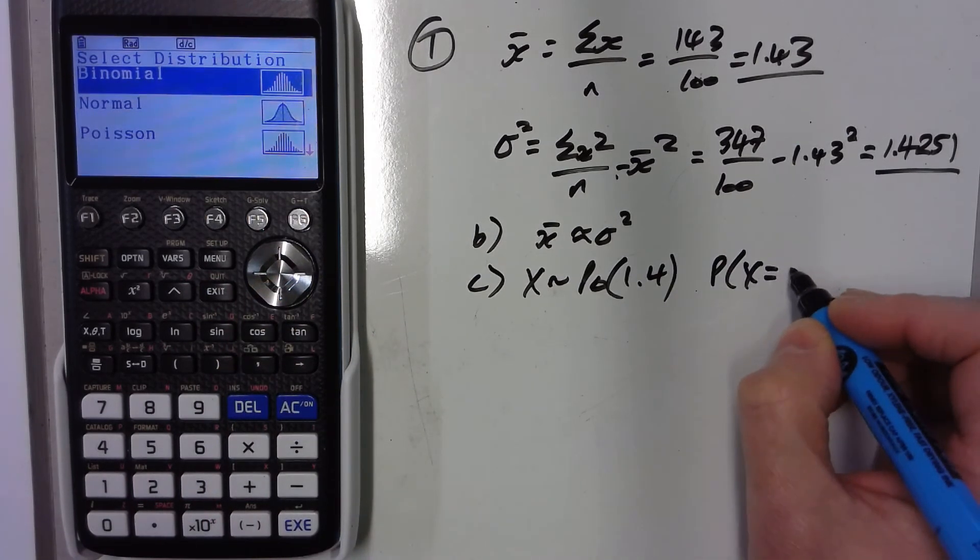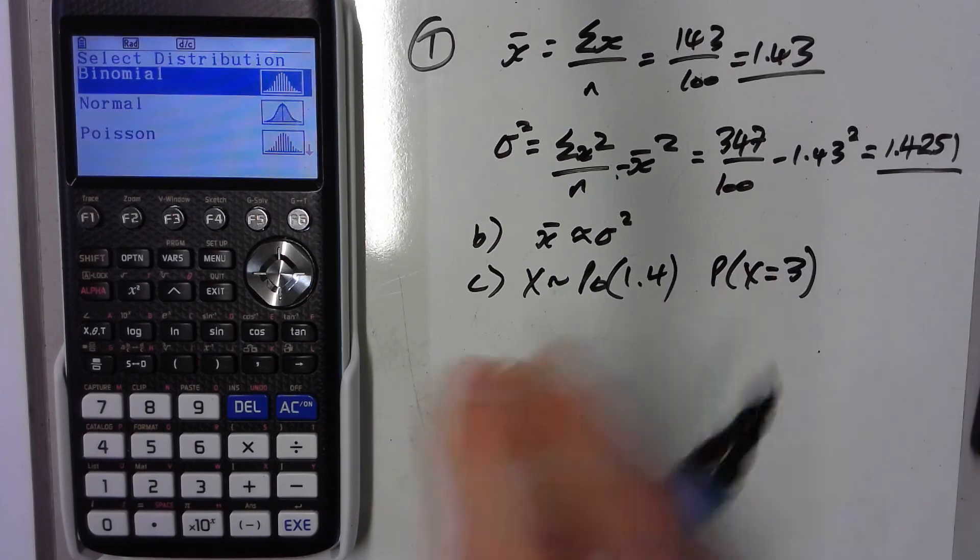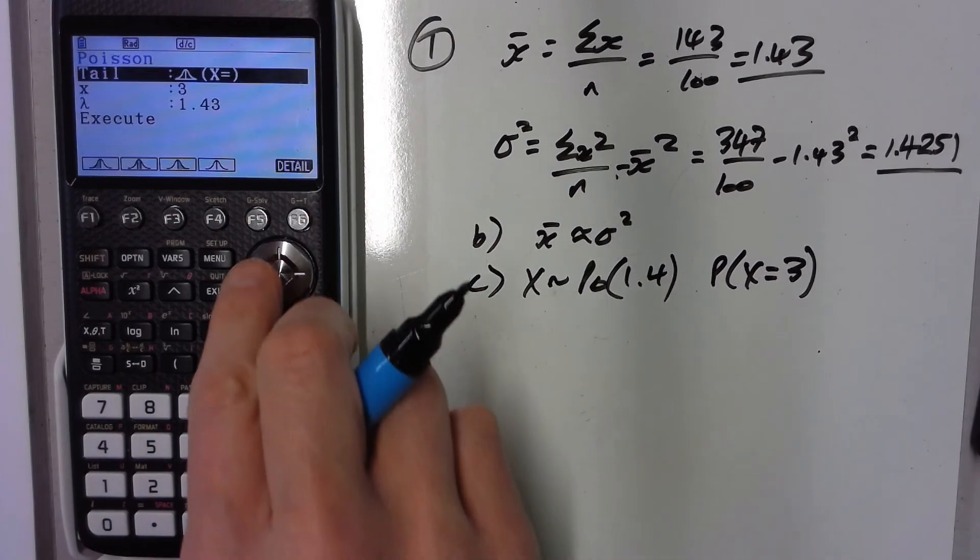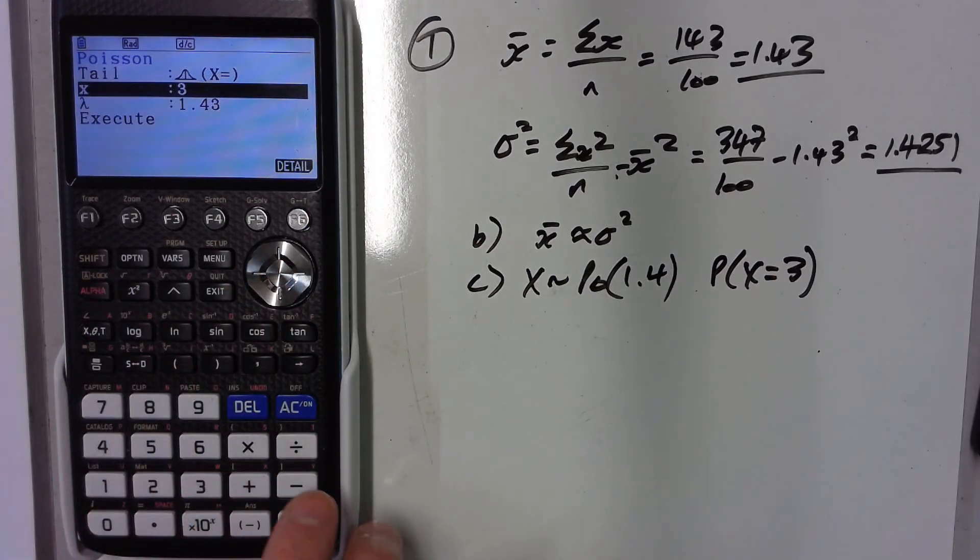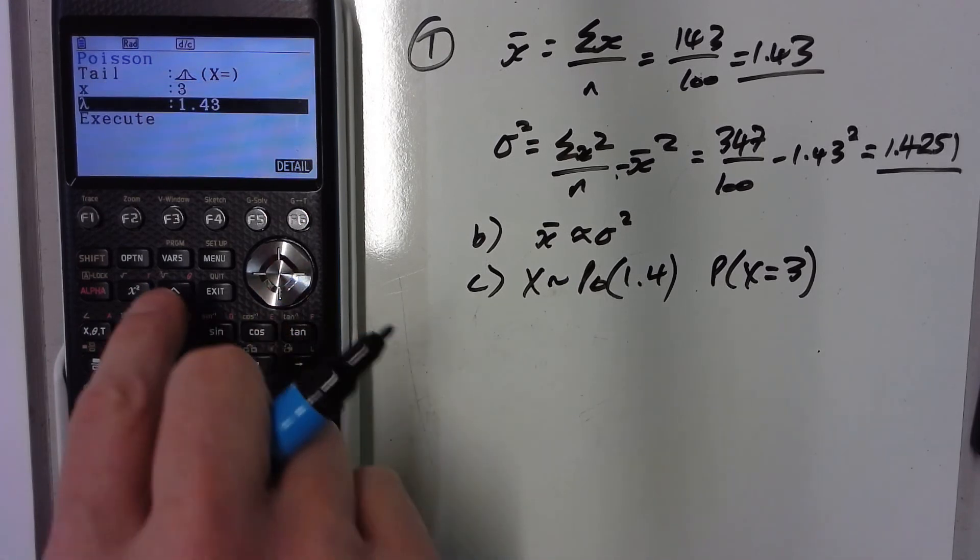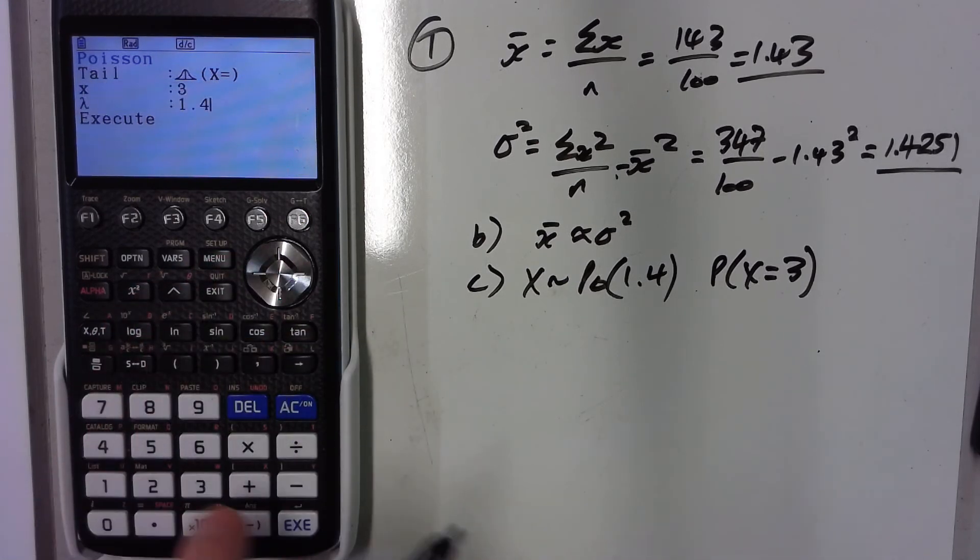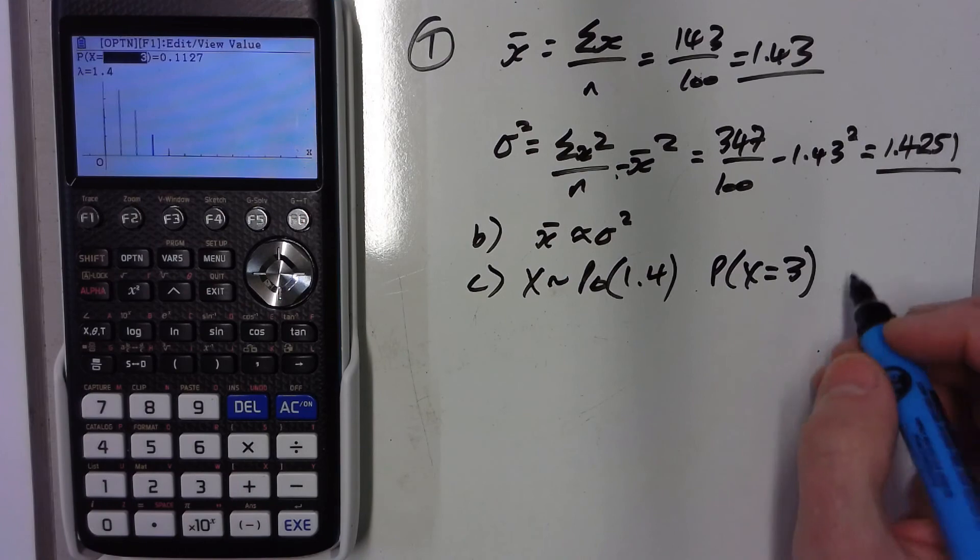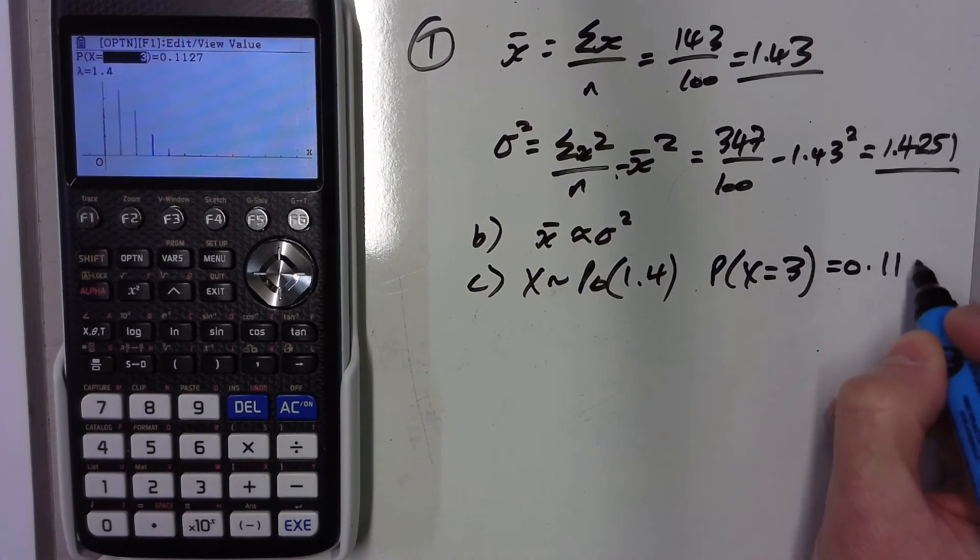...the probability that x is equal to 3 cherries, they were asking us. So I've got 3 cherries. I actually used 1.43 when I did it. I'll change it to the same as the answers—they used 1.4. And that gives me 0.113.